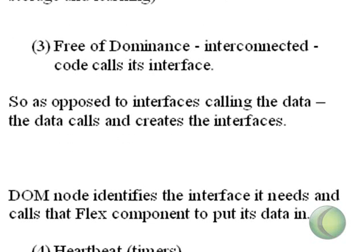The third part: the collective needs to be free of dominance. It must be interconnected. So in the old days, interfaces call data. We want to do just the opposite — we want data to call the interfaces — and we're going to show you how to do that in Flex. The DOM node itself will contain the information about the interface that it needs to express itself.